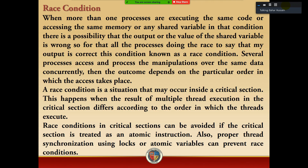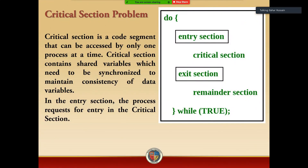وہ کہتا ہے کہ multiple threads execute ہو رہے ہوتے ہیں critical section کے اندر، اور اگر وہ unorderly execute ہونا شروع ہو جائیں تو automatically ان کی problem بار سکتی ہے۔ Race condition in the critical section can be avoided if the critical section is treated as an atomic instruction. Also, proper thread synchronization using locks and atomic variables can prevent race condition۔